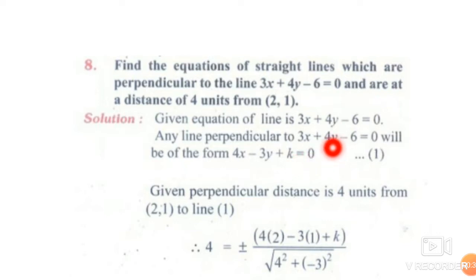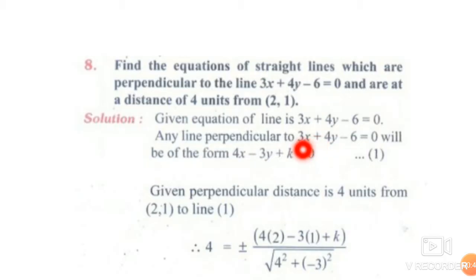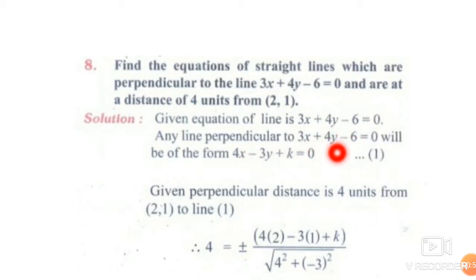What is the condition for a perpendicular line? The coefficients are swapped and one sign is changed. So the perpendicular line form becomes 4x minus 3y plus k equal to 0. This is equation 1.